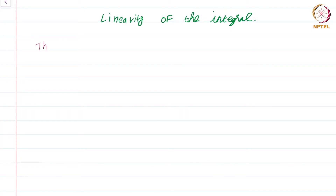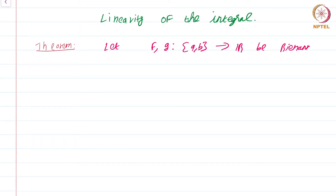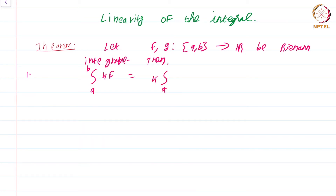So, this is the theorem. Let f, g from [a,b] to ℝ be Riemann integrable. So, you are given two Riemann integrable functions. Then, number one: the integral from a to b of k·f is equal to k times the integral from a to b of f, for all k in ℝ. If you multiply the function by a constant k, then integrability is preserved. Moreover, the integral value is just k times the integral from a to b of f.